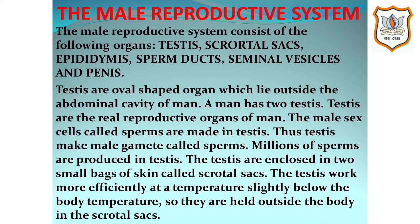First we will discuss about the male reproductive system. The human male reproductive system consists of the following organs: testes, scrotal sacs, epididymis, sperm ducts, seminal vesicles, and penis. The human male reproductive system is shown in the figure in our next slide. Since the human male is called man, we can also say that it is the reproductive system of man.